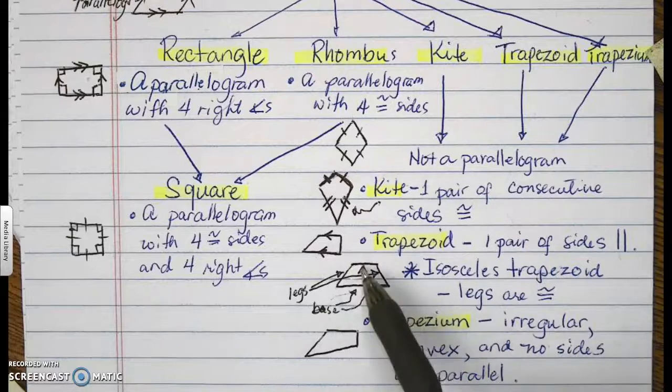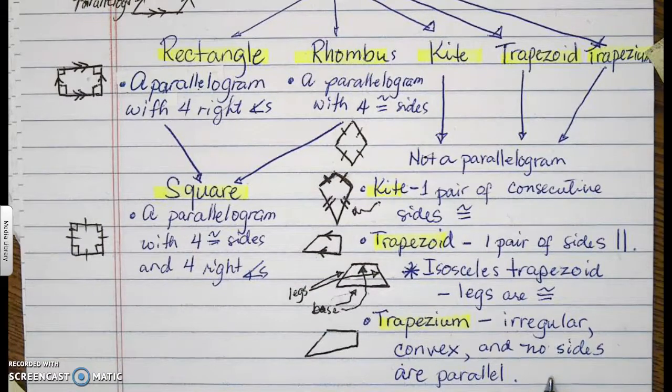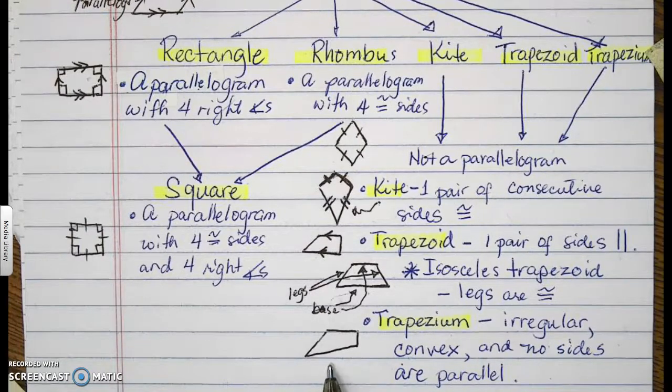So we have two bases. This is a base and that is another base. A trapezium is an irregular convex quadrilateral and has no parallel sides nor congruent sides. This is an example of a trapezium.